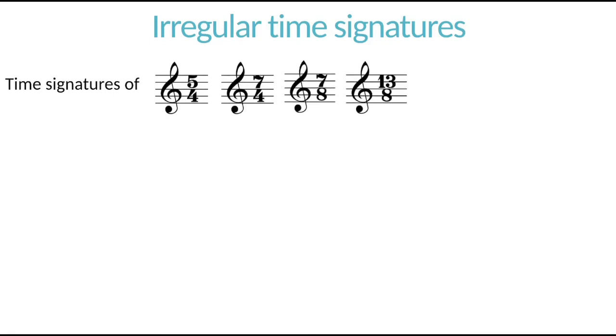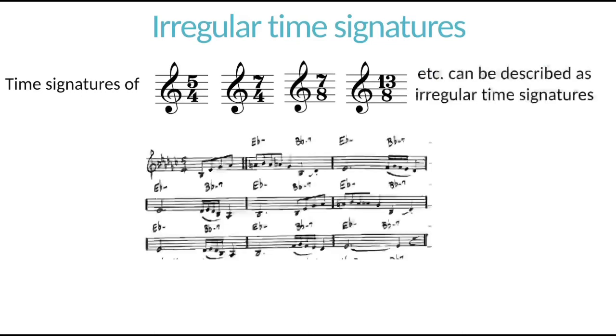So, time signatures like this. 5-4, 7-8, 7-4, 13-8. We can describe these as irregular time signatures. So, look at this music here, for example. Time signature 5-4. If you were to count up the beats in the bars, they would add up to five beats. That's an example of an irregular time signature.